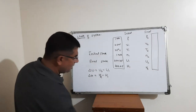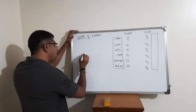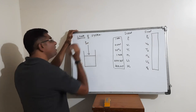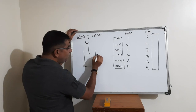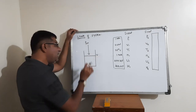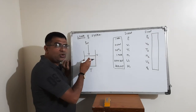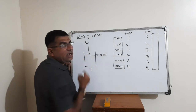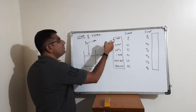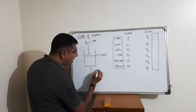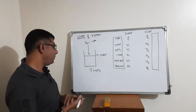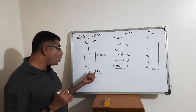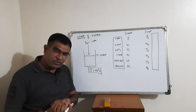Consider a container with enclosed gas. Suppose the initial volume is 10 dm³, the pressure is 1 atmosphere, and the temperature is 25 degrees Celsius. Recall Boyle's law from last year: at constant temperature, pressure is inversely proportional to volume. If we keep temperature constant at 25 degrees Celsius and increase pressure from 1 atmosphere to 2 atmosphere, the volume will decrease.